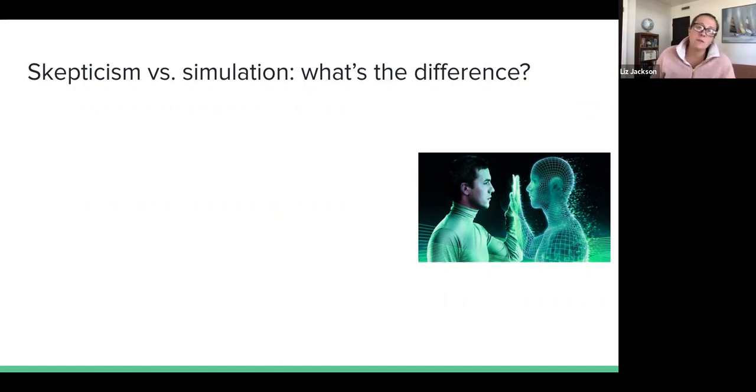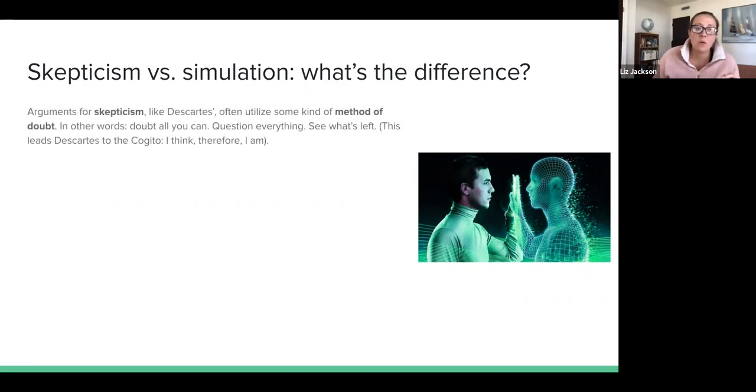So what is the difference between skepticism and the simulation argument? Arguments for skepticism, think about like Descartes but others as well, they often utilize what's called the method of doubt. We talked about this already, which is basically doubt everything you can, question everything and see what's left. So remember we have for Descartes the method of doubt, the dreaming argument, the evil demon, and then Descartes, all this doubting leads Descartes to the cogito - I think therefore I am. You're trying to doubt everything.